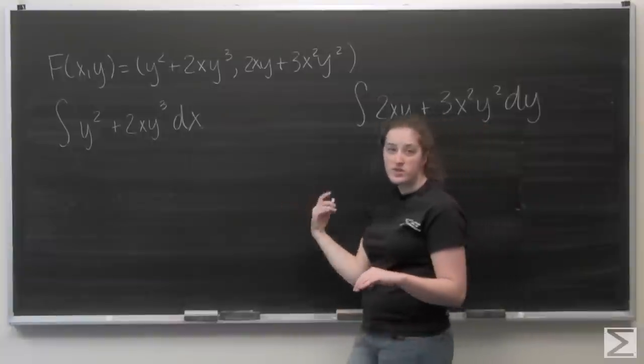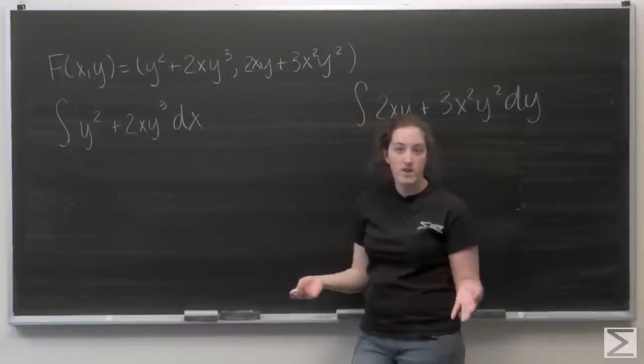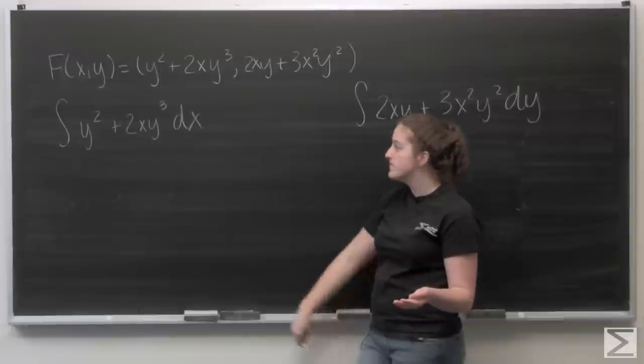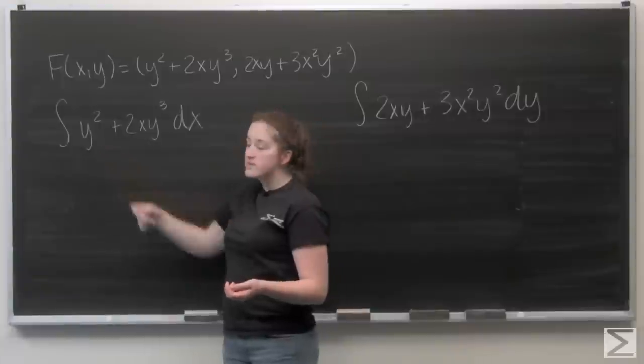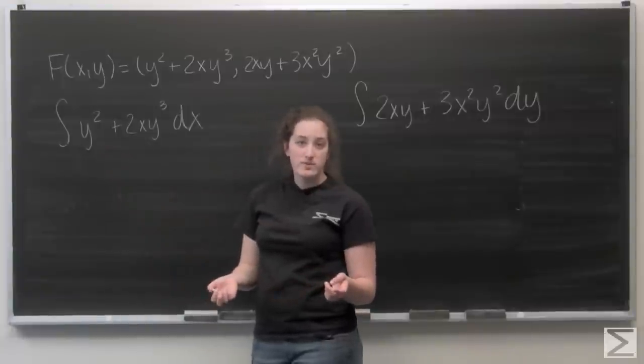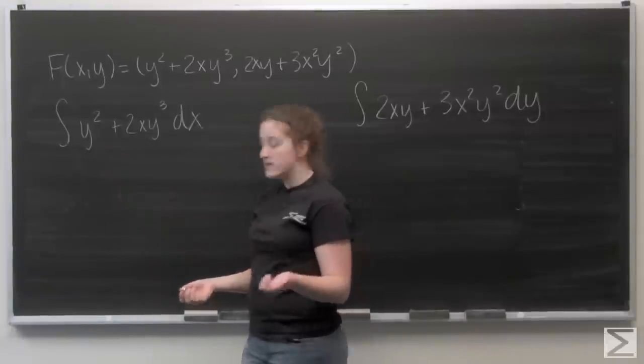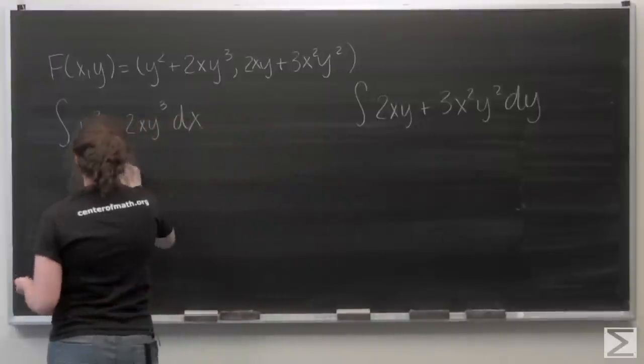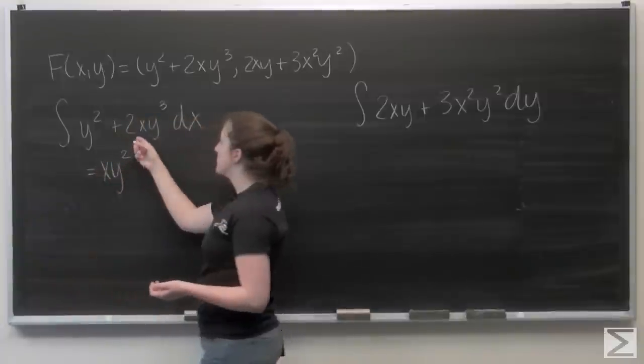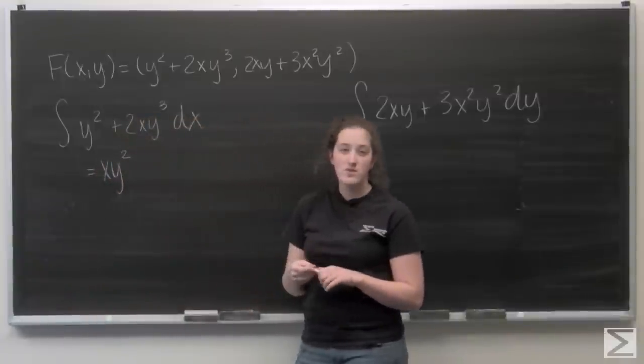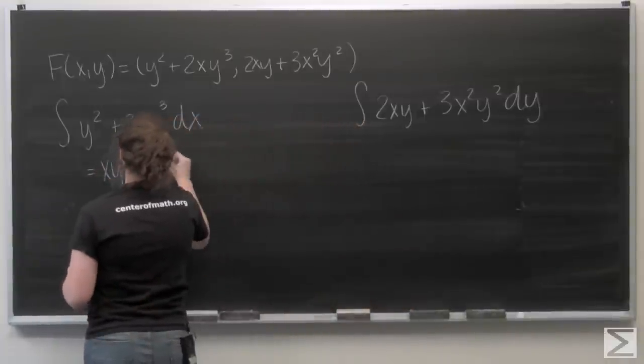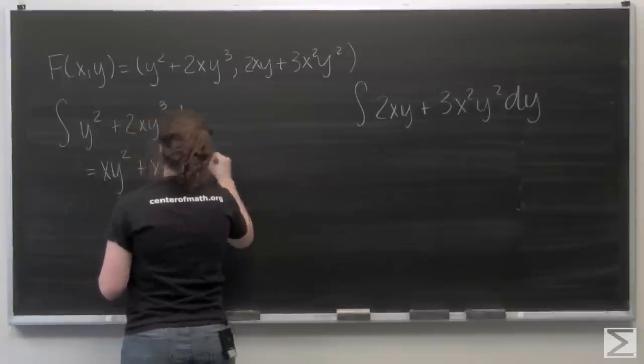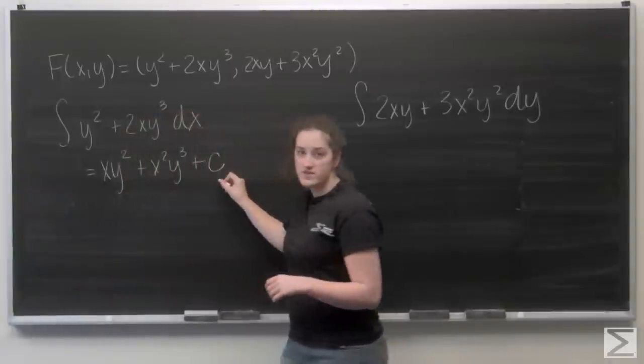And hopefully these two integrals should give me the same thing, and then I'll have that as my potential function. So let's start with this integral with respect to x. I'm going to treat y squared like a constant, so when I integrate I get xy squared. And when I integrate 2xy cubed, I get x squared y cubed, and then I'll add a constant of integration.